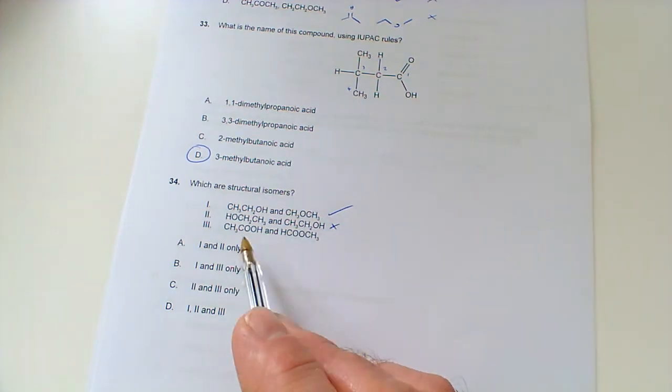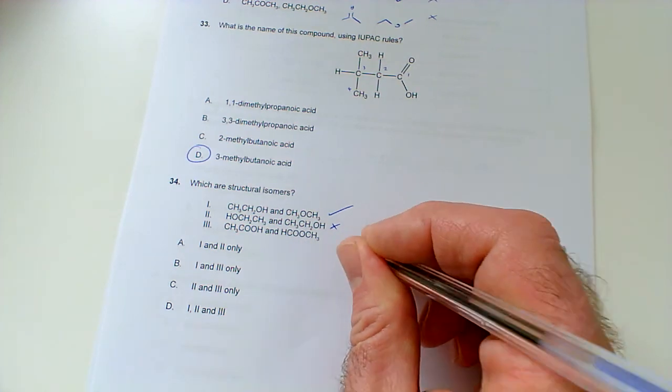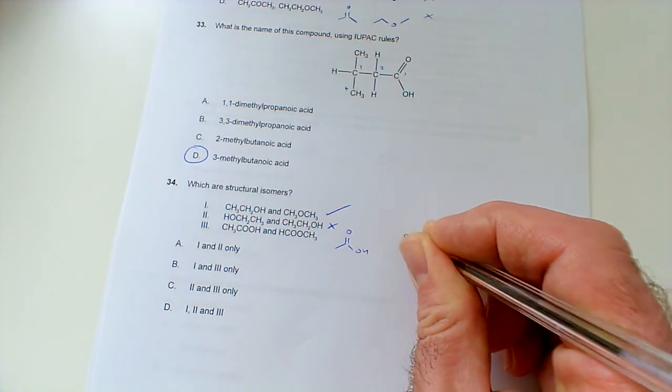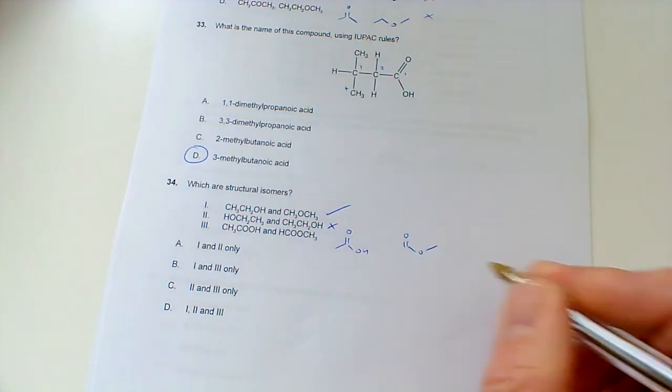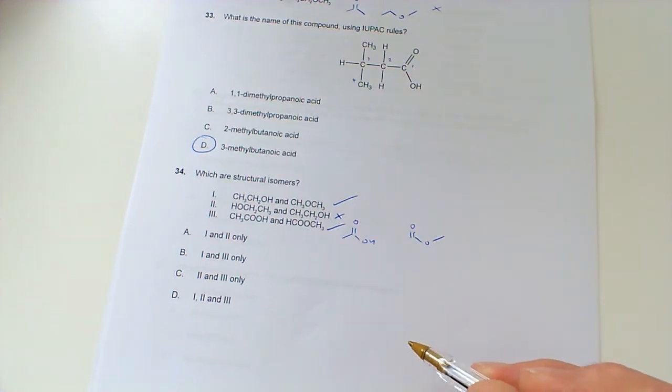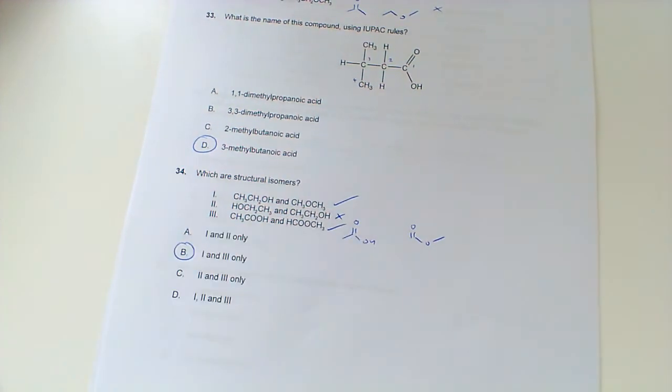And then this one, okay, we've got ethanoic acid and methyl methanoate. Well, they've got the same number of carbons, oxygens, and hydrogens. It's just one of them is this. And the other one is that, with the hydrogen on that carbon there. So, those are structural isomers. So, it's one and three only, which will be B.